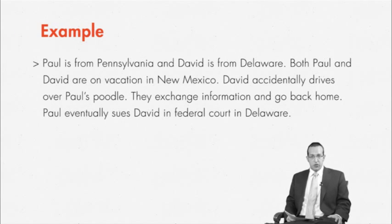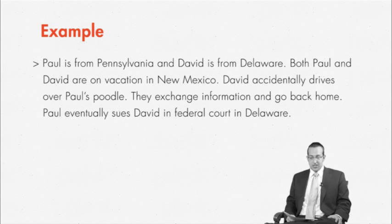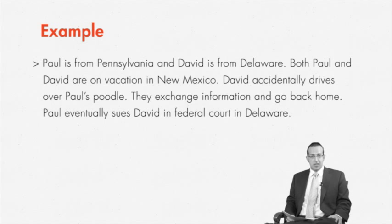I'm going to give you a hypothetical to go through the choice of law rules. It's rather complicated — I recommend you write it down as I go. Let's say that Paul is from Pennsylvania and David is from Delaware. Both Paul and David are on vacation in New Mexico. David, while driving, accidentally runs over Paul's poodle. They exchange information and go back home.